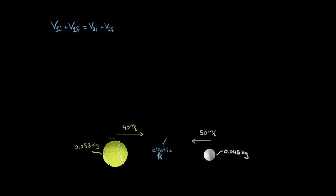Let's say object one is the tennis ball and object two is the golf ball. So in that case, the initial velocity of the tennis ball is positive 40 — positive because it's directed to the right — plus the final velocity of the tennis ball. I'll write that as vt final instead of v1, so I know which object's velocity I'm talking about.